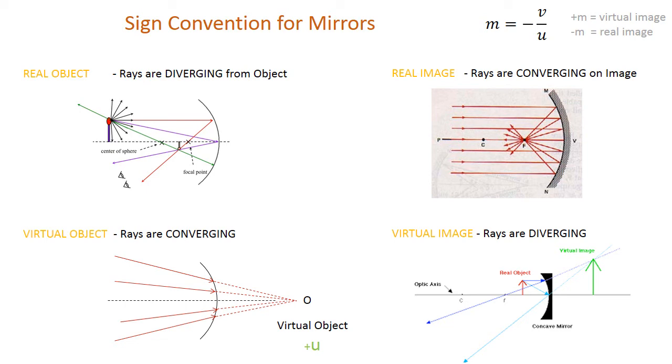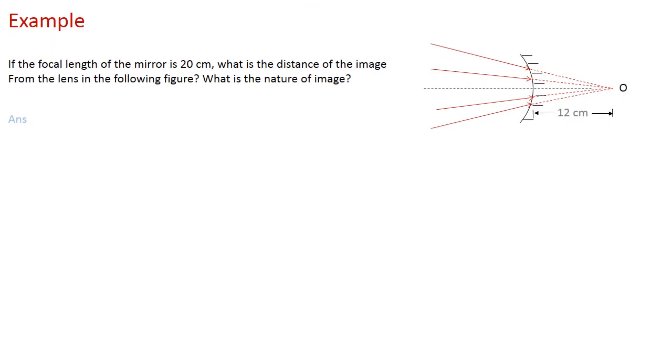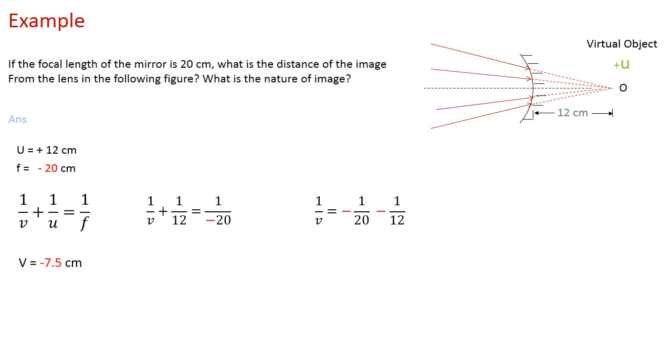Here in this concave mirror the rays are converging, and so we can treat this as a virtual object. In this case the U will be taken as plus 12 centimeter, and the focal length, since it's a concave mirror, the focus is on the left-hand side on the negative x-axis, is taken as minus 20 centimeter.